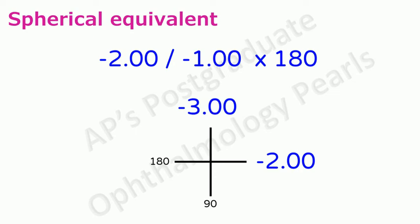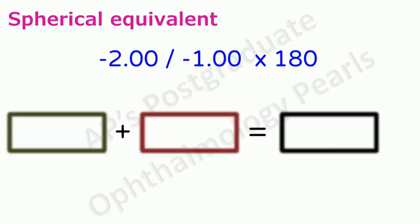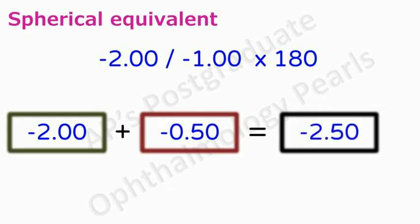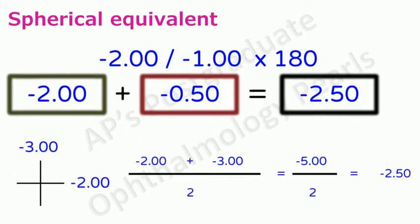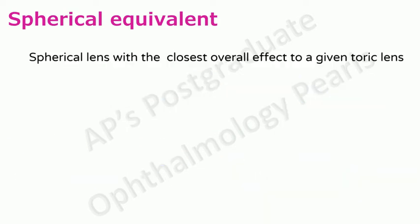Let us compare this to the spherical equivalent obtained by using the previous formula. To the spherical power add half of the cylindrical power. So here minus 2 plus minus 0.5 is minus 2.5. So as you can see regardless of which method you use the spherical equivalent is the same. So now this definition has become clear.